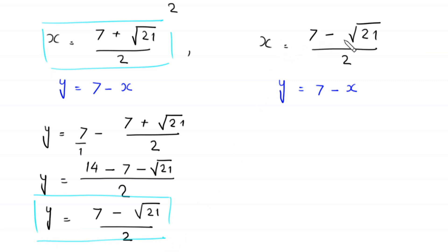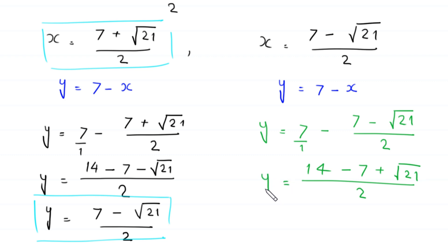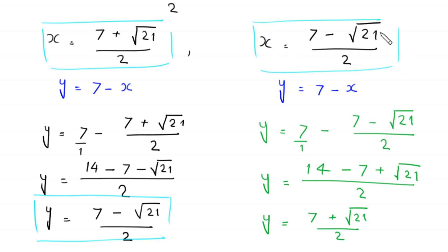When x equals (7 minus root 21) over 2, then y equals 7 minus (7 minus root 21) over 2. Taking LCM: y equals (14 minus 7 plus root 21) over 2, which gives y equals (7 plus root 21) over 2.